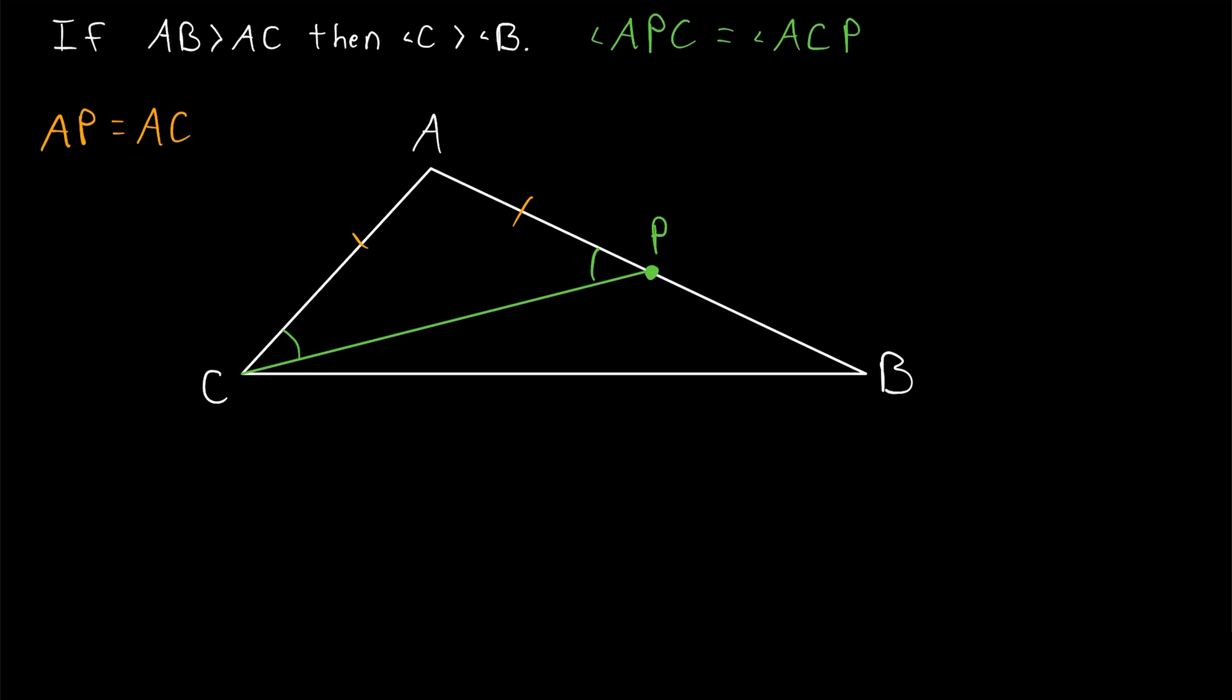Now, where can we go from here? Well, remember, we're trying to relate angle C to angle B. Clearly, we can relate angle C to this smaller angle. In particular, that angle is smaller because angle C consists of this angle ACP plus some.